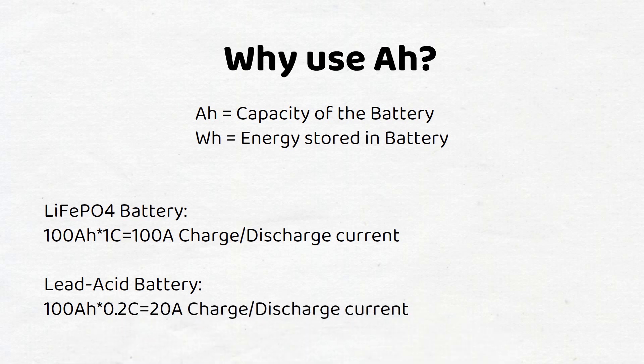Knowing this, we can calculate the maximum charge and discharge current for the battery under normal conditions. For example, a 100 amp hour lithium battery can provide a current of 100 amps, while a lead acid battery can only provide a current of 20 amps. A battery can provide more current, but that will decrease its lifespan because the cells will degrade faster.